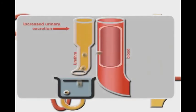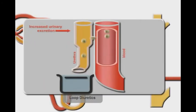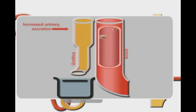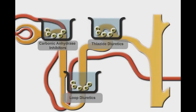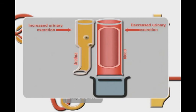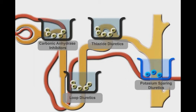Loop diuretics, carbonic anhydrase inhibitors, and thiazide diuretics potentiate the excretion of potassium ions into the urine in a more or less similar pattern. On the other hand, potassium sparing diuretics is the only group that enhances the reabsorption of potassium ions from the nephrons and increases its concentration in the blood.